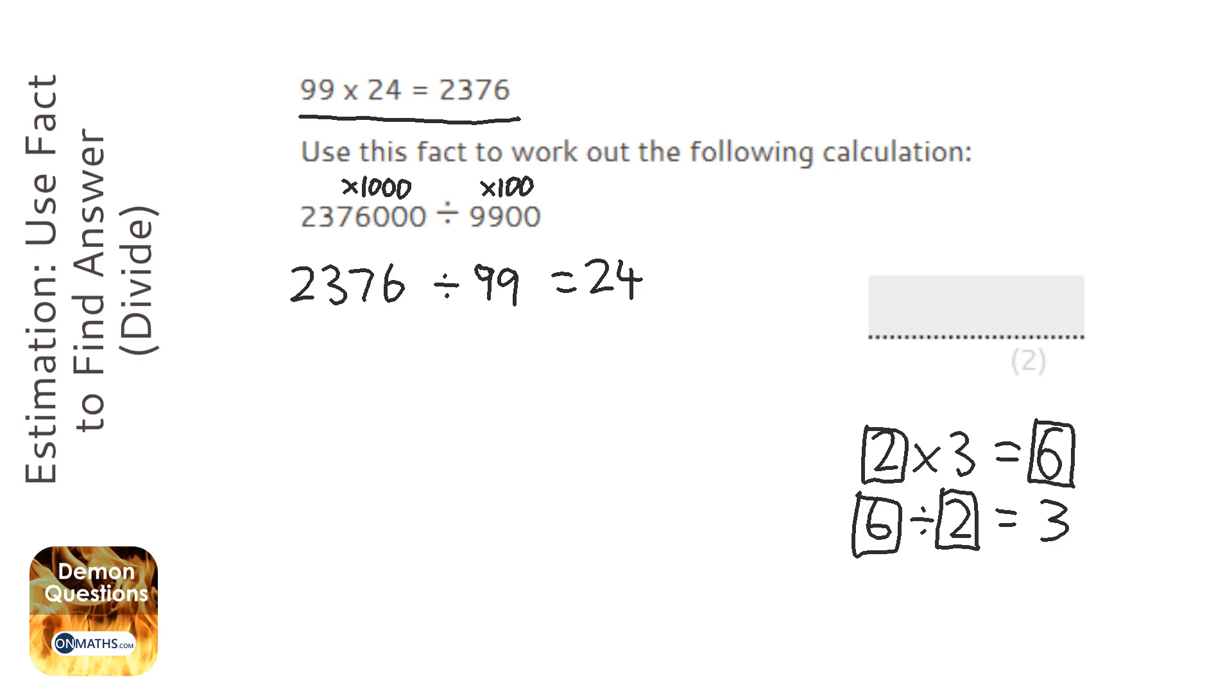Whenever you times the bottom by 100, which we have in this question, it actually makes the answer 100 times smaller. So we're making it 1,000 times bigger and then 100 times smaller. So what are we doing in total?